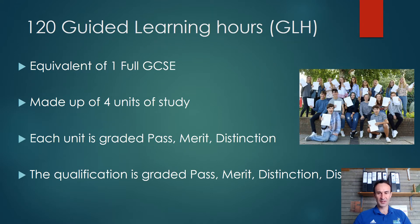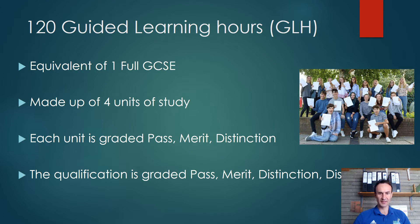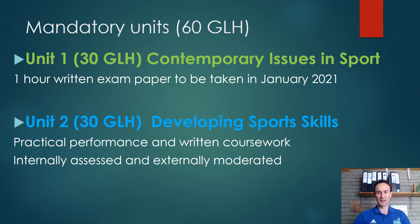It's not a GCSE course but it is the equivalent in terms of size — we measure this course in guided learning hours, and it is the same as one full GCSE. You have five lessons over the fortnight dedicated to this should you choose it. The grades for each unit are pass, merit, and distinction, but you can get a distinction star as your full grade. We have two mandatory units and two optional units out of the four units you will study — the first is an exam called Contemporary Issues in Sport, and the other three involve written coursework with some practical elements as well.